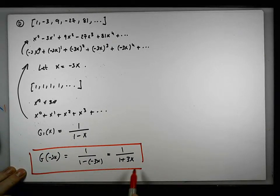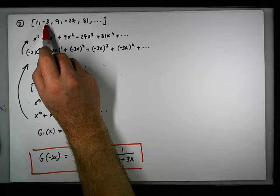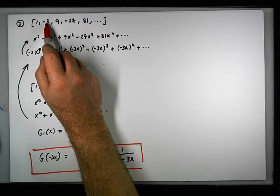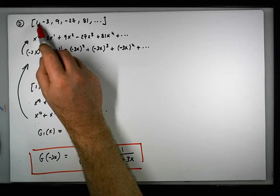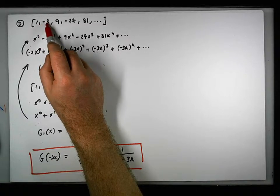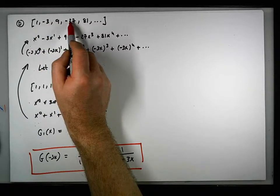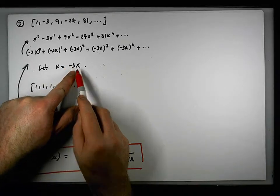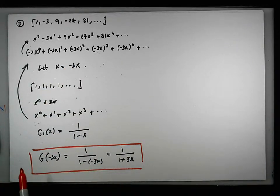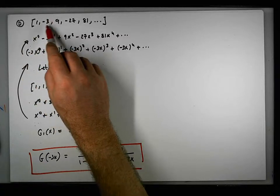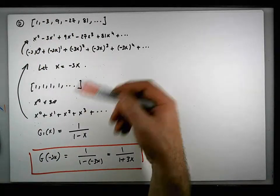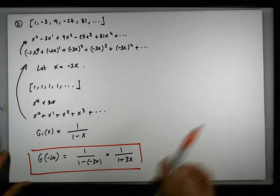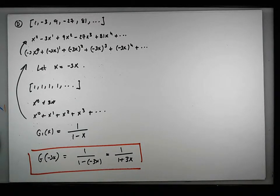So you can actually see: to get a geometric sequence where the ratio is 3 times the previous term, you substitute in 3 times x. In the previous one, to get the geometric progression based on 5 times the previous term, we substituted in 5x.